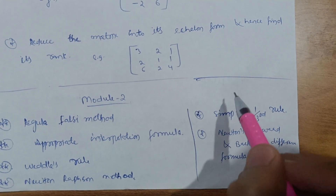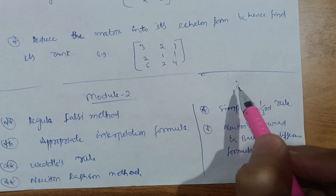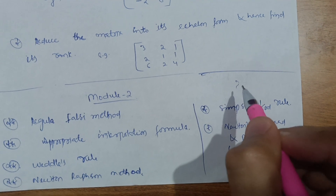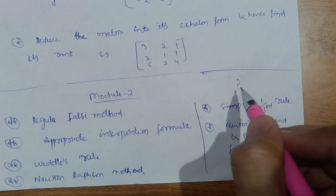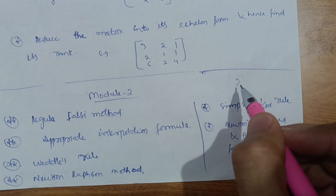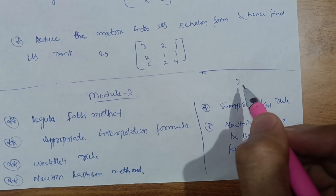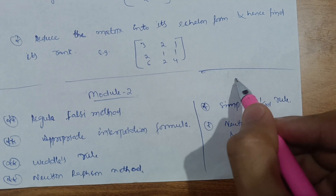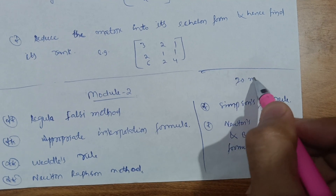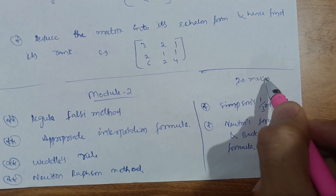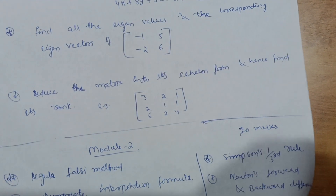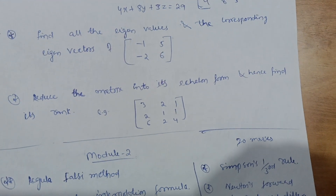Remember, Modules 1 and 2 are the passing modules in Additional Mathematics 2 (18MAT DIP 41). You can easily score 20 marks in each of these modules. These two modules are very simple — refer to them thoroughly.